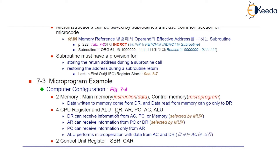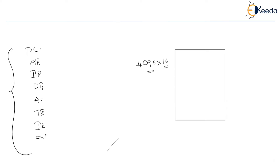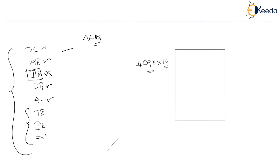In addition to the ALU, we do have just four registers: program counter, address register, data register, and accumulator. We remove these extra registers from the CPU. In addition to which, we do have an ALU. There is no instruction register here. In the simplified system, we are not using an instruction register.